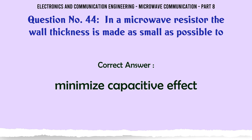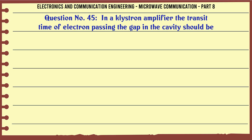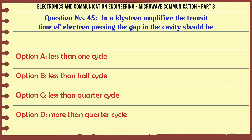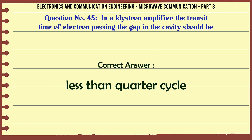In a klystron amplifier, the transit time of electrons passing the gap in the cavity should be — A. Less than 1 cycle, B. Less than half cycle, C. Less than quarter cycle, D. More than quarter cycle. The correct answer is: less than quarter cycle.